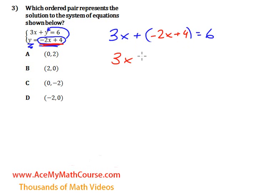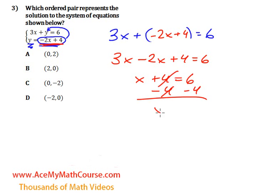So we have 3x plus negative 2x, that's just minus 2x plus 4 equals 6. 3x minus 2x is just x plus 4 equals 6, so we can subtract 4 from both sides of the equation, and x equals 6 minus 4, which is 2.